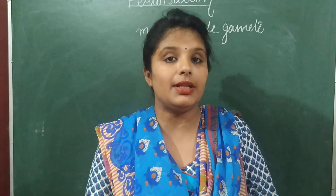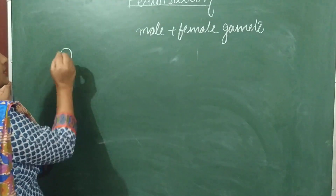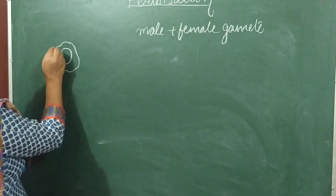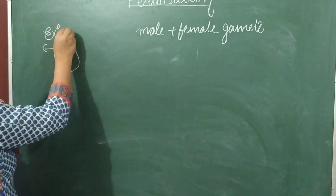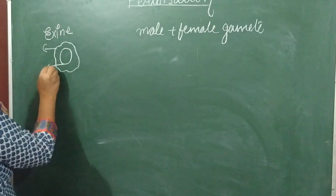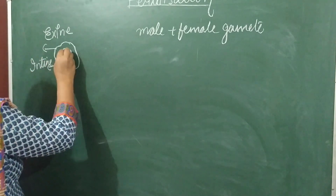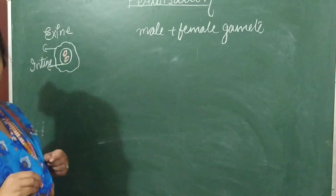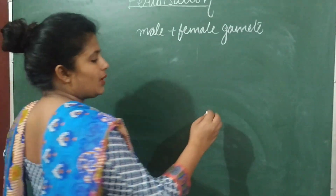Let's discuss how pollen grains transfer and what kind of change we see in pollen grains. This is the diagram of a pollen grain. This is the outer membrane of the pollen grain, called exine — exine is a tough layer. This is intine, which is a comparatively soft layer. There are two nuclei: one is the generative nucleus and one is the tube nucleus.